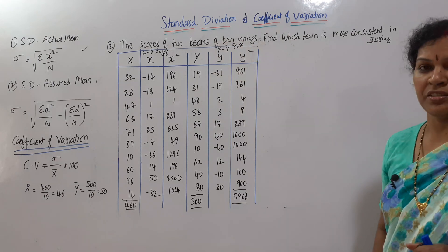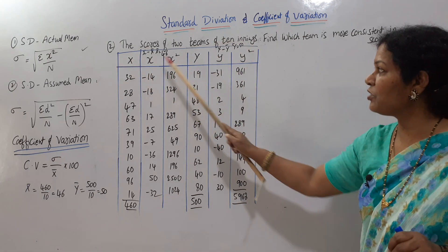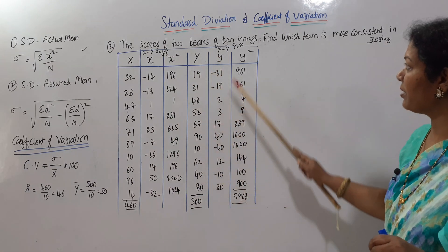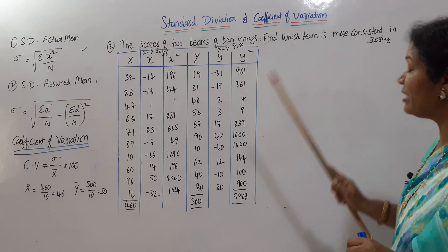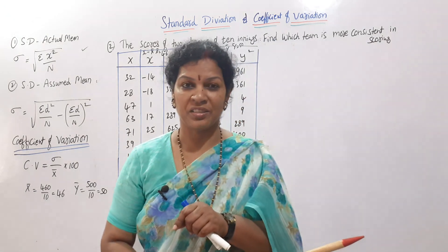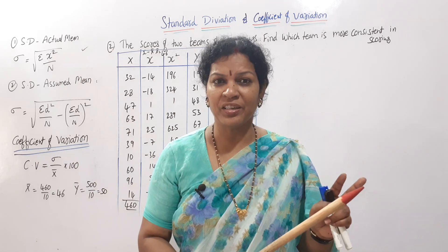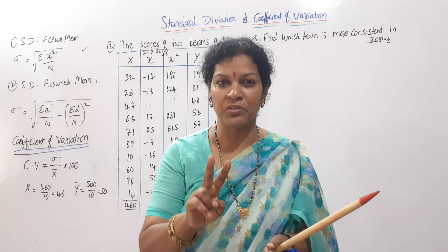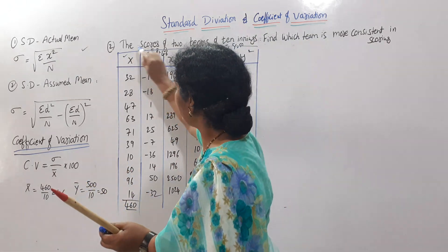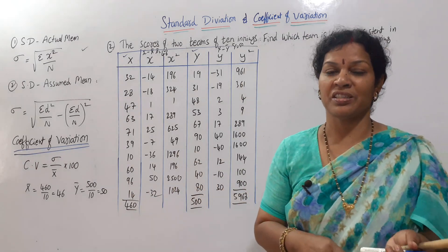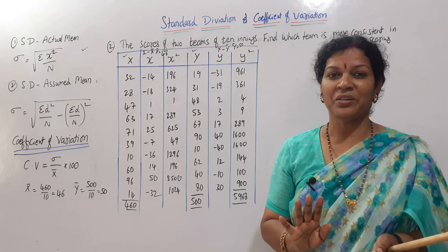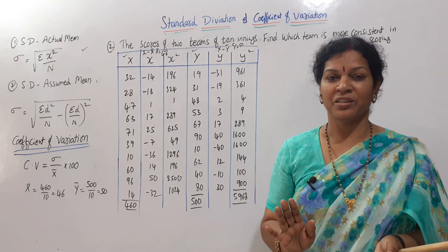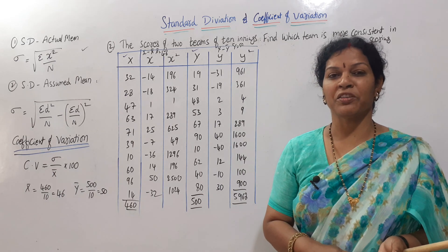The problem: scores of two teams across 10 innings are given. The two teams are X and Y, each with 10 innings. Find which team is more consistent in scoring. Though the problem doesn't explicitly mention CV, when we want to compare and find which is more consistent, we have to calculate CV.